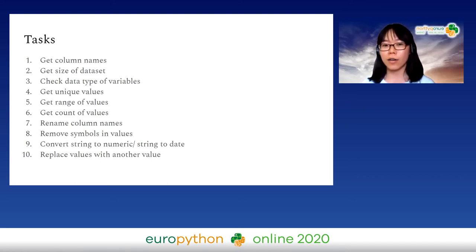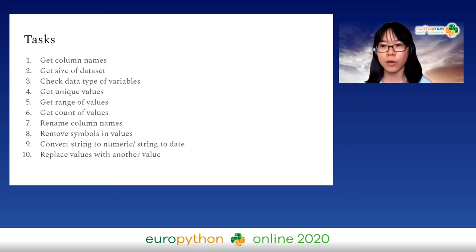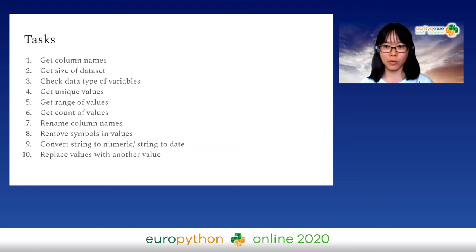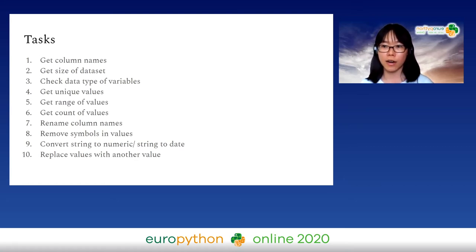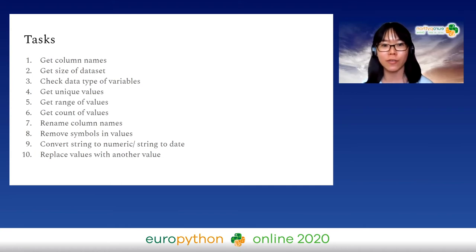For example, for a categorical variable like gender, you might have Female, Male, and Undisclosed. But if the data allows manual entry, people might type 'M' or 'F', which refer to the same thing as Male and Female but are treated as separate categories. This is where we need to identify unique values first and then make corrections.